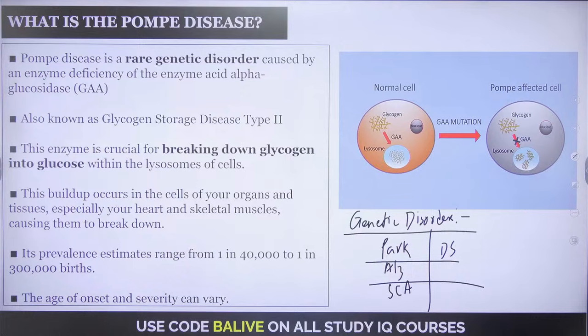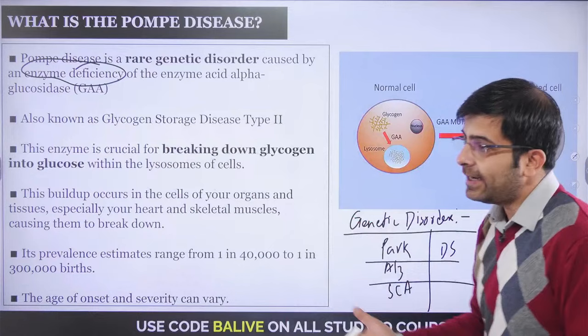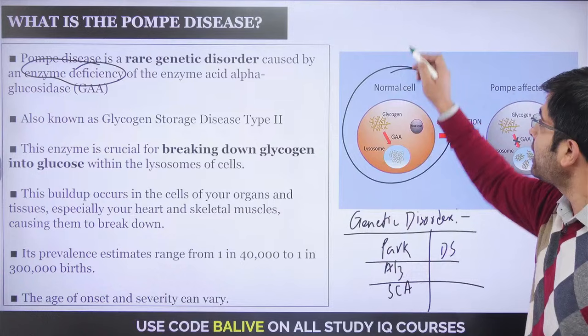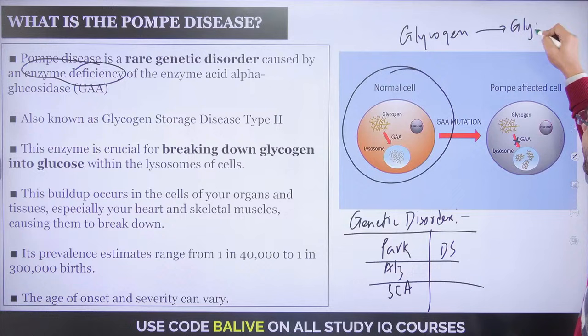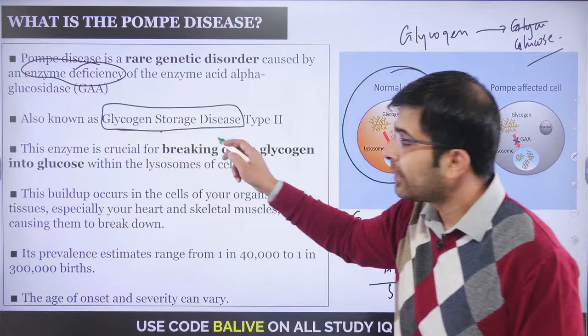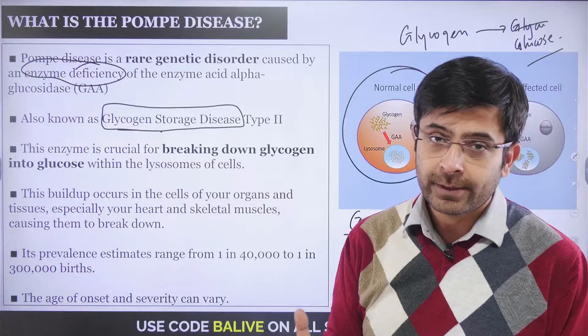In the human body, glycogen is broken down into glucose — that is the energy you use. But in Pompe disease, this breakdown doesn't happen. There is accumulation of glycogen within your body, which is why it is also known as glycogen storage disease. This buildup causes immense stress on your organs, tissues, heart, and skeletal muscles.